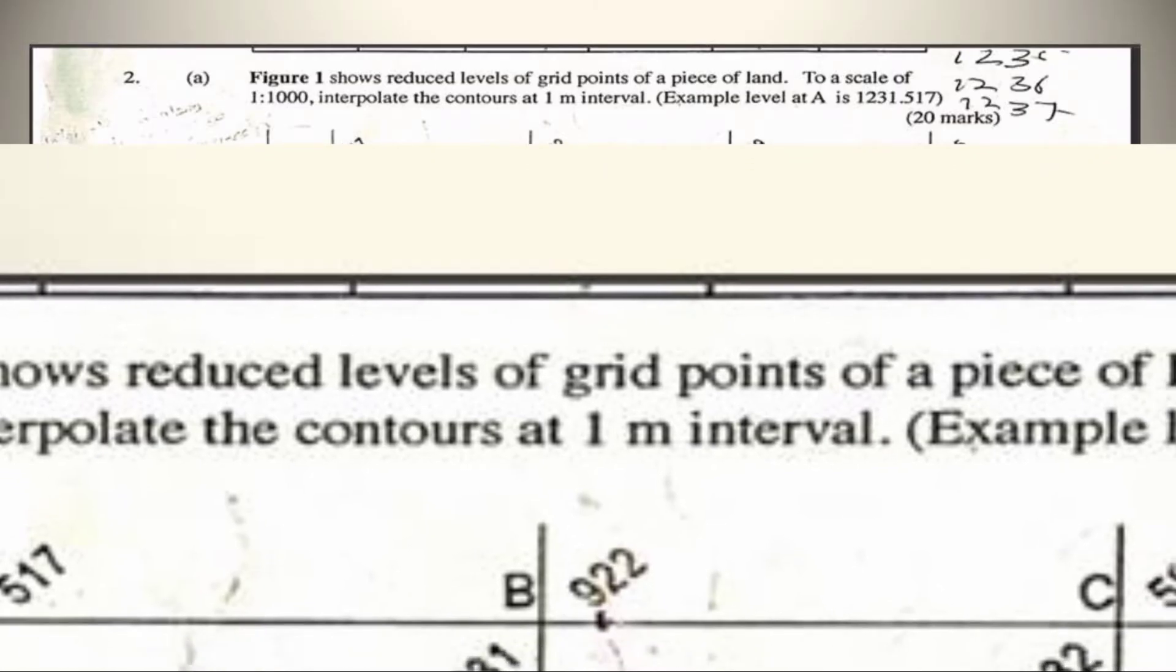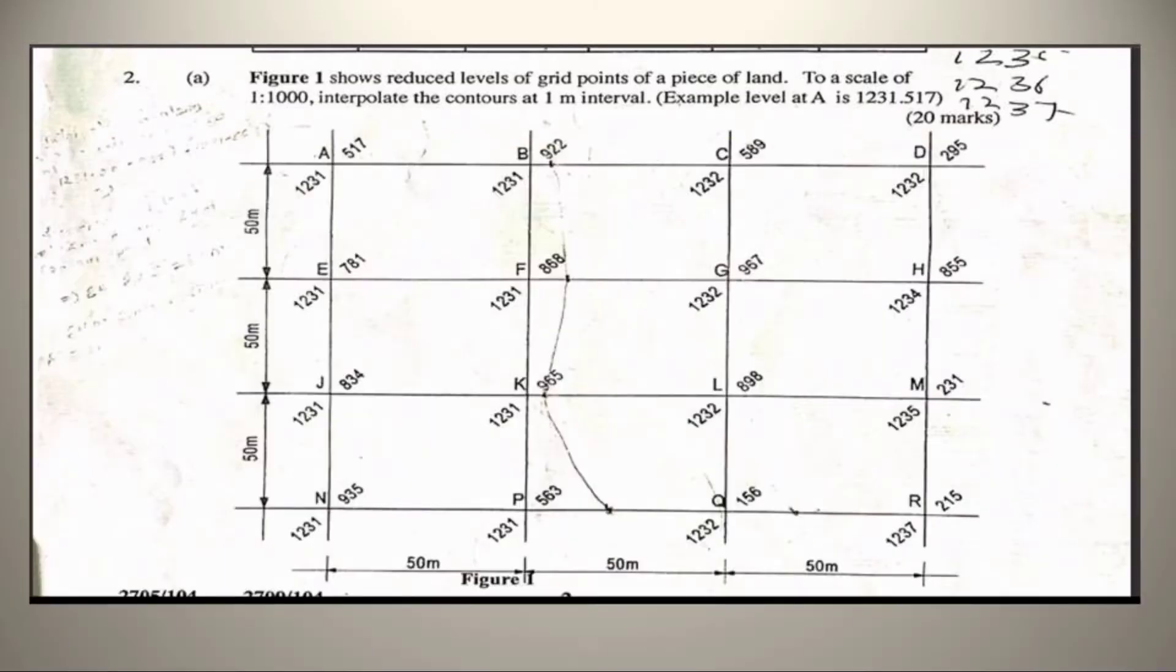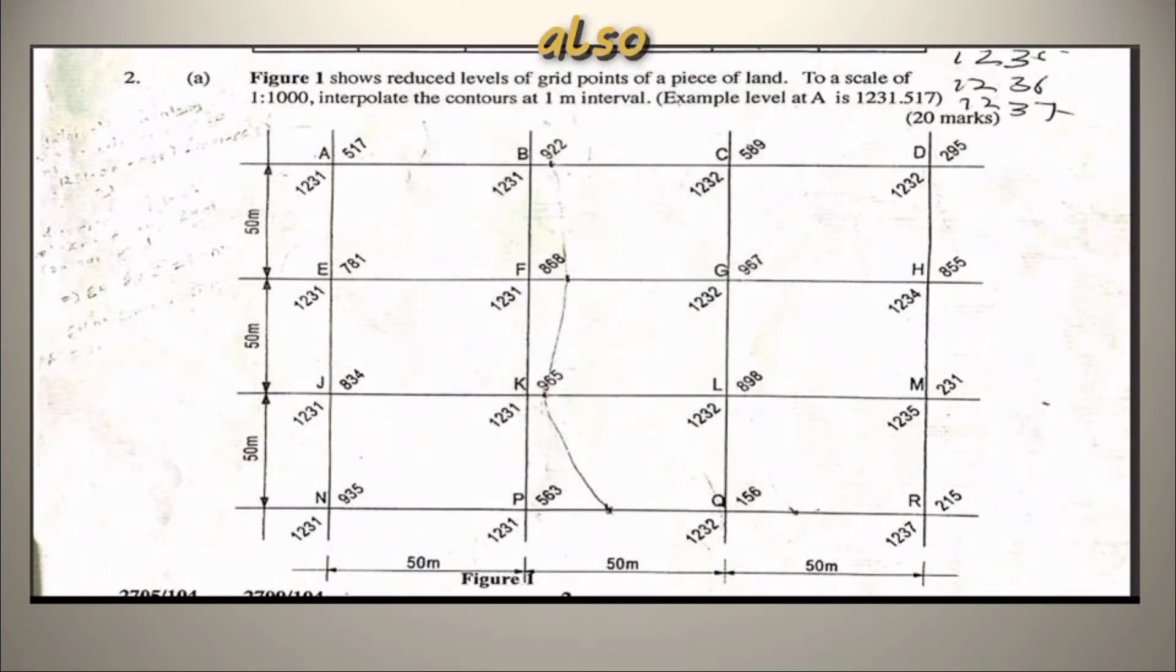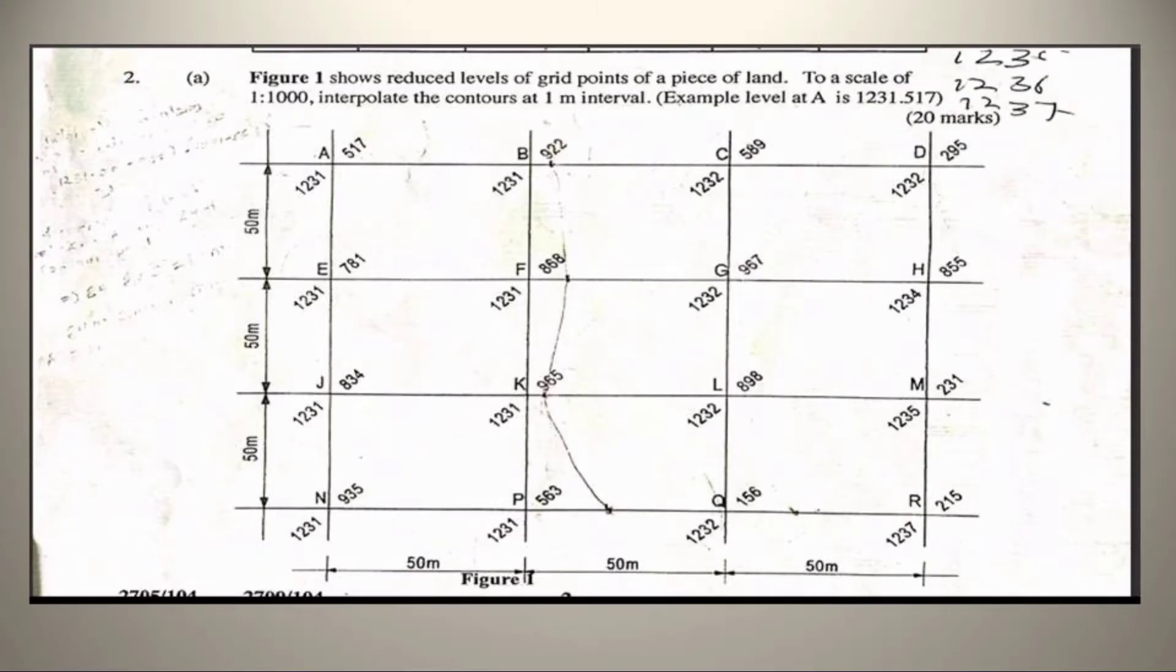That means 6 contour lines in the plan showing 1232, 1233, 1234, 1235, and 1236 meter interval, or also 1237 meter contour. When our contour intervals are decided, then it's time to plot them on our site. Let's get started with the 1232 meter contour line first.